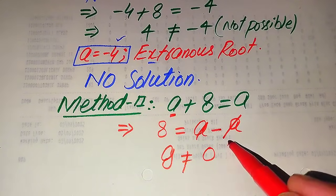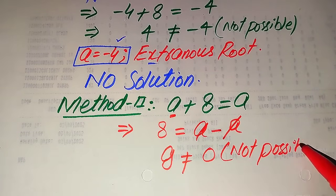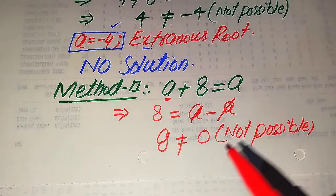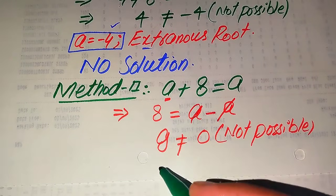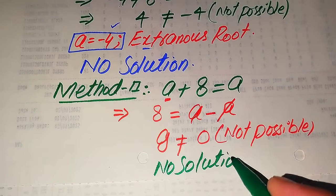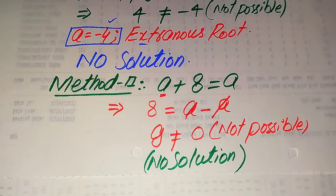Here you see that 8 is not equal to 0 — it is not possible that 8 equals 0. So we cannot get any value of a in Method 2, which means this question has no solution. From both methods we arrive at no solution, and that is our final answer. Thank you so much for watching this video — please subscribe to my channel for more exciting videos.